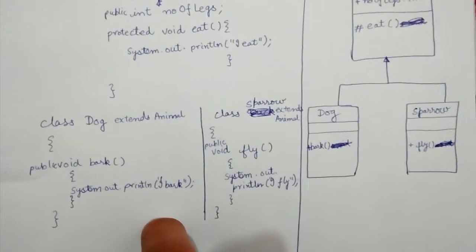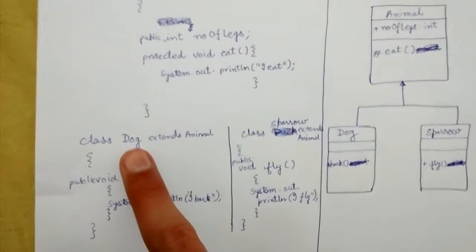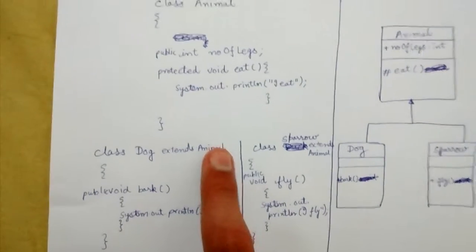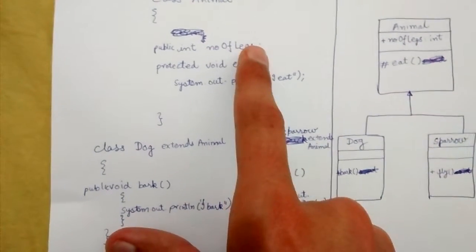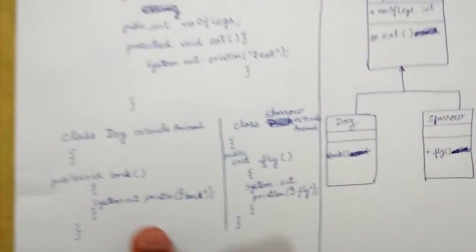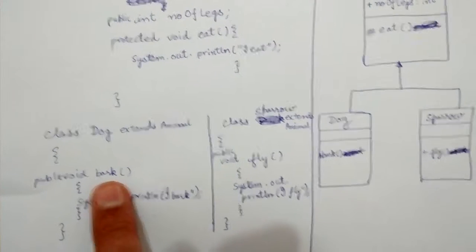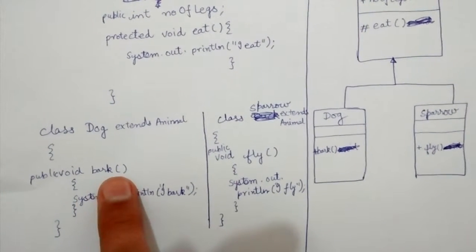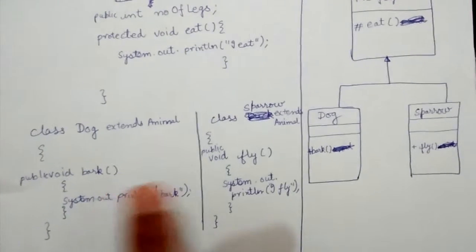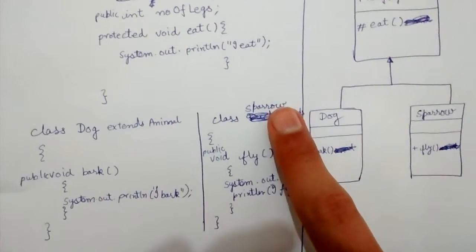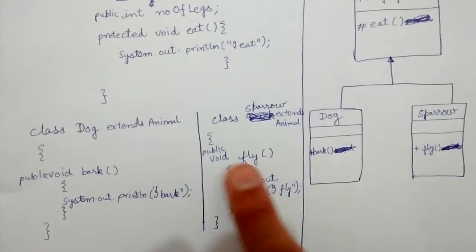Dog extends Animal, so it has the numberOfLegs property and eat method, plus it defines its own method called bark. Similarly, Sparrow defines a public void method called fly.